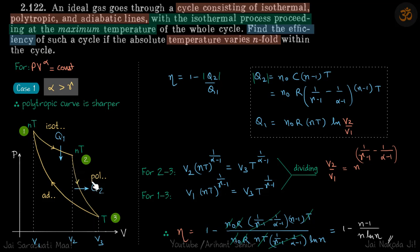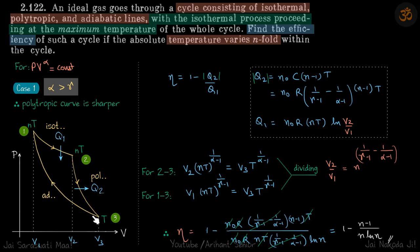Since they have not specified which is which, let's take both cases. In the first part, we'll take the polytropic curve to be sharper. If polytropic is represented by PV raised to power alpha, and it is the sharper curve, then alpha is greater than gamma. This is the polytropic process.